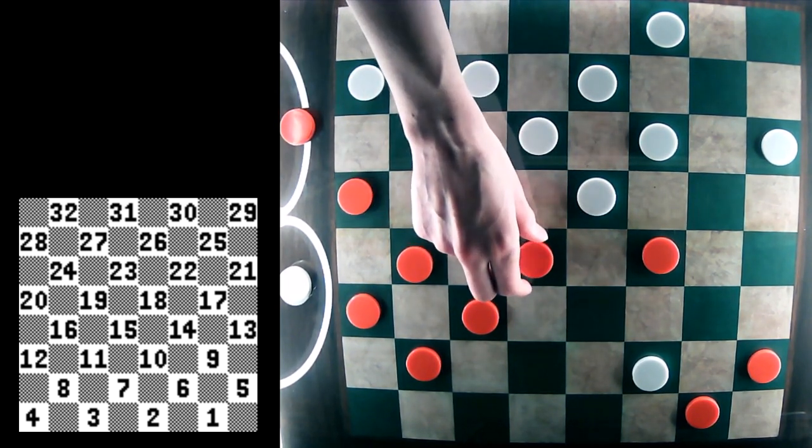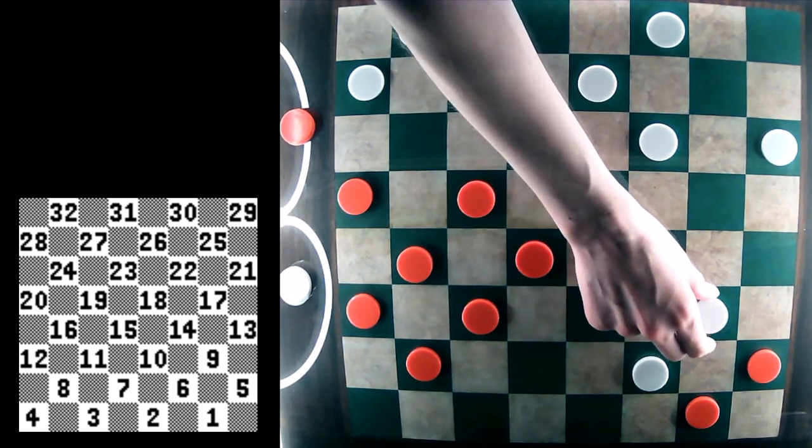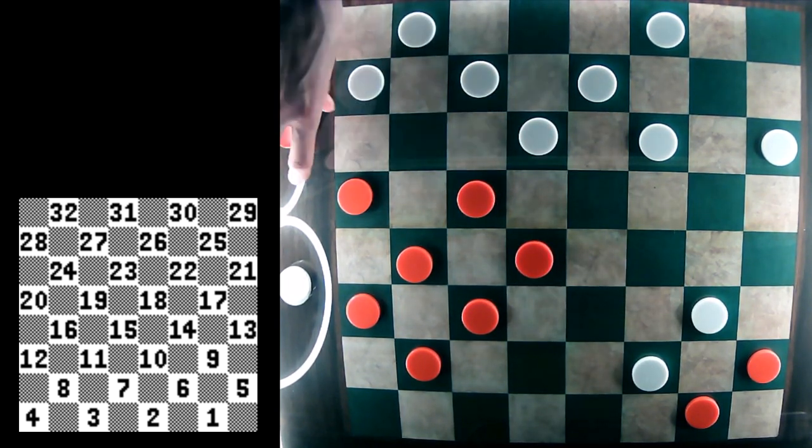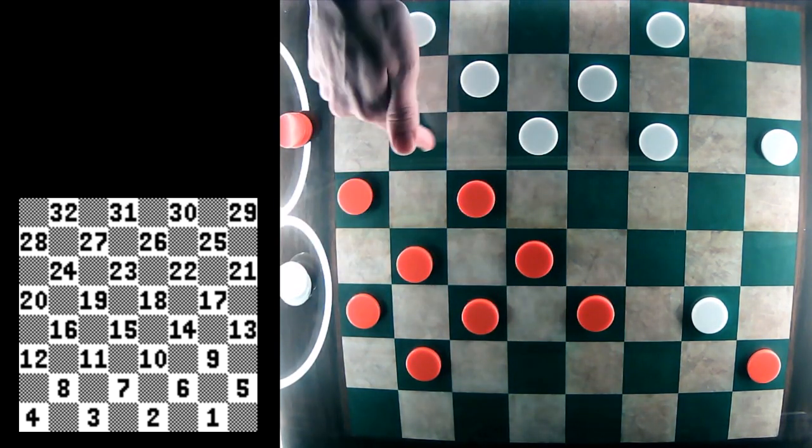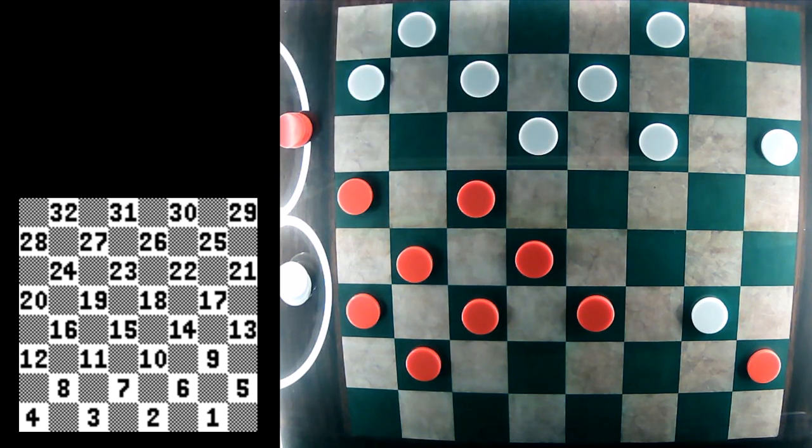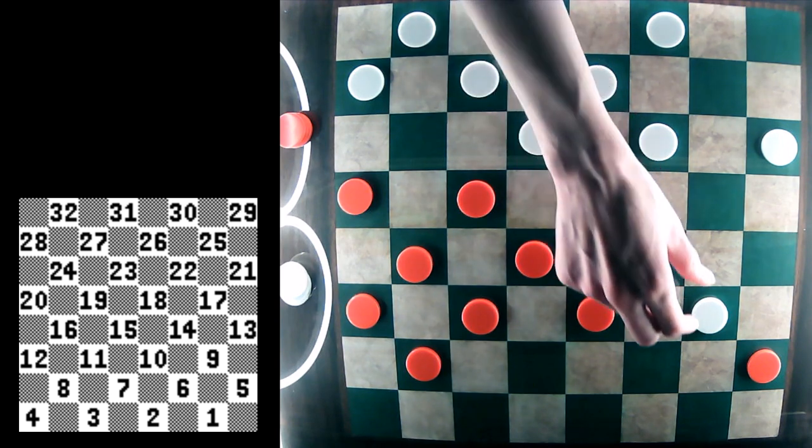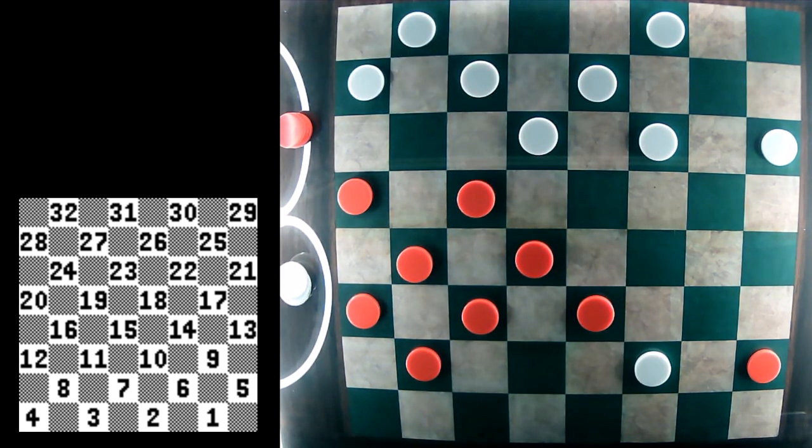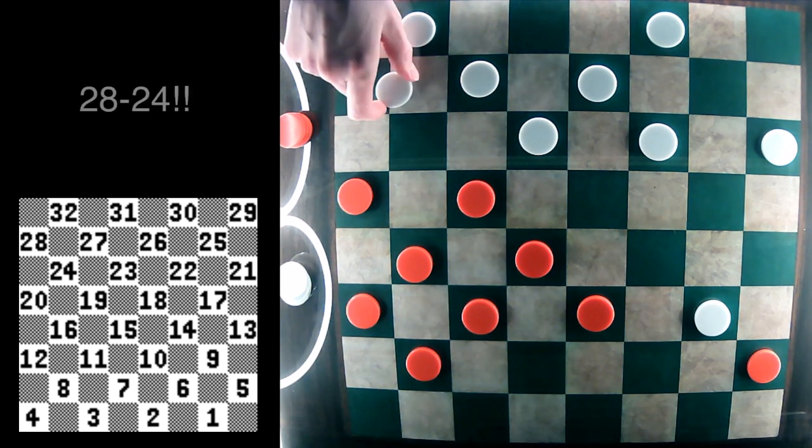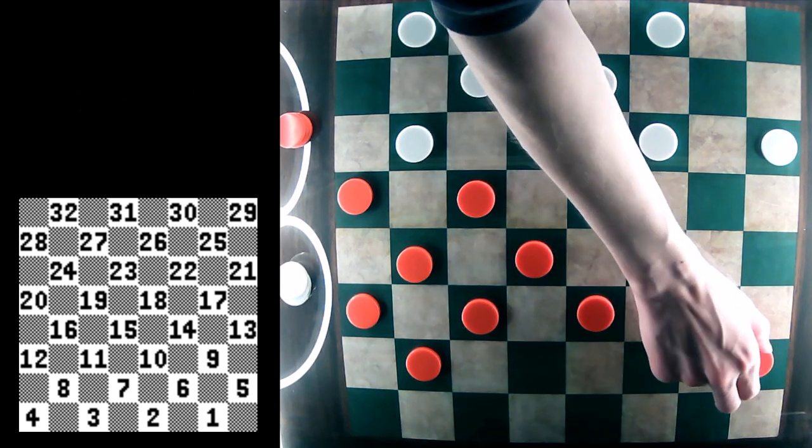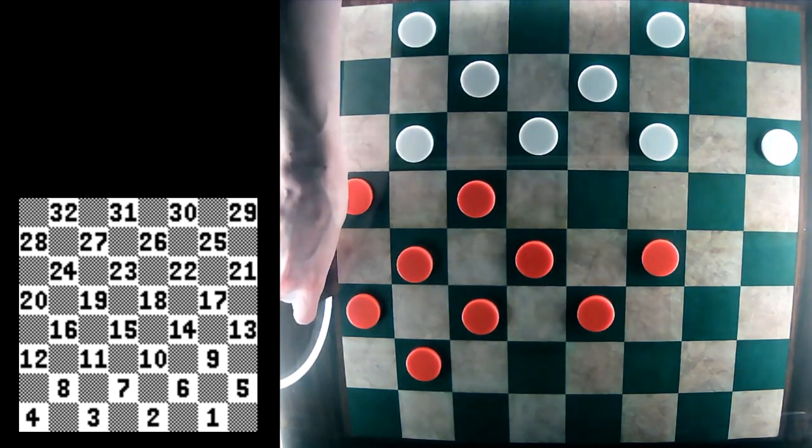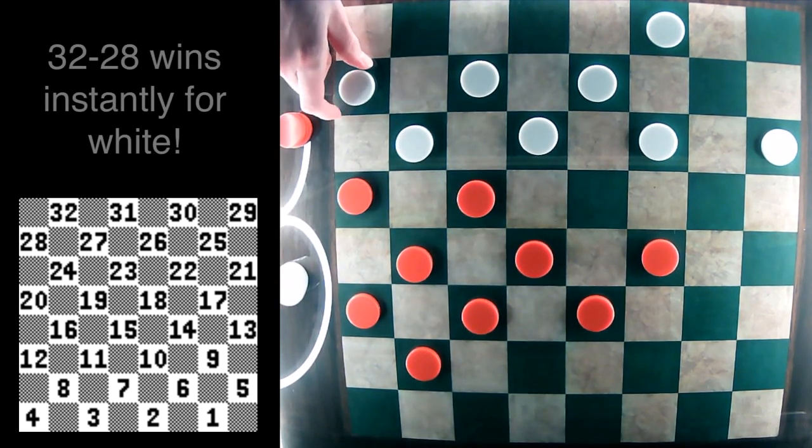And then red jumping 1-10, creating a column here and threatening the double exchange in white's double corner. So white can't go 9-6 because of that 19-24 move. So instead white deploys a really great tactic here, and it goes 28-24. Now if red goes 5-14, white can go 32-28 and win instantly.